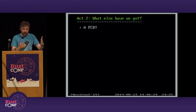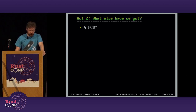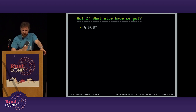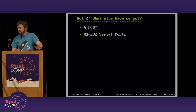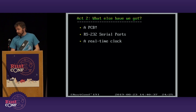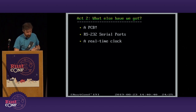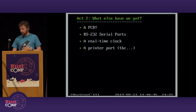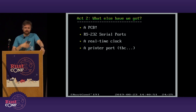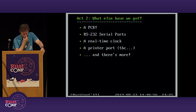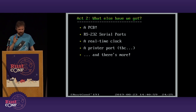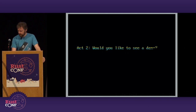There is a PCB — I've got one here, you can grab me in the hallway to have a look. It started as a bit unreliable so there will be a revision 2 because it has bugs. It's got serial ports, a clock, a printer port — though I haven't worked out how to make the printer port work yet; I need to do some research on how printers actually work. And there's more. So that's the end of the slides — who wants to see a demo?